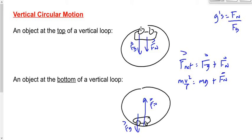At the top of the circle: gravity is negative, normal force is negative, centripetal force is negative — all pointing downward. At the bottom of the circle: gravity is negative, normal force is positive (upward), centripetal force is positive (upward). Make sure you have the signs down before working through problems.